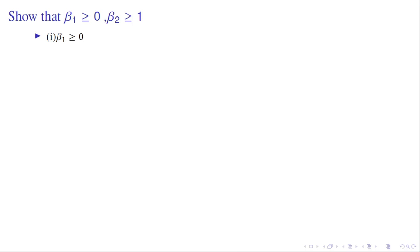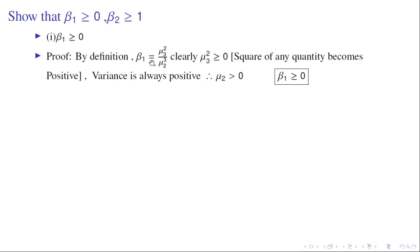Now we show that β1 ≥ 0. By definition, β1 = μ3²/μ2³. Clearly, the numerator μ3² is always greater than or equal to 0, because squaring any quantity — positive or negative — gives a non-negative result. The variance μ2 is always positive, so μ2³ (cube of a positive) is also positive. A positive value divided by a positive value gives β1 ≥ 0 always.